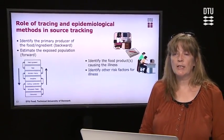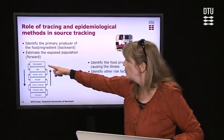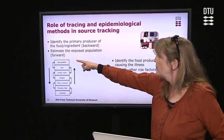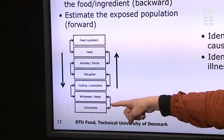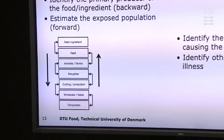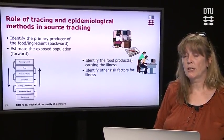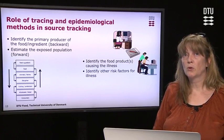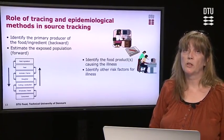Regarding the role of tracing and epidemiological methods in source attribution: tracing can go either forward or backward through the production pathway. Backward tracing is used when we have an outbreak with many ill consumers and want to trace back to the original primary producer. Forward tracing is used when a critical pathogen is found in a batch of food that has already been distributed, and we want to track where the food has gone and estimate the size of the exposed population.